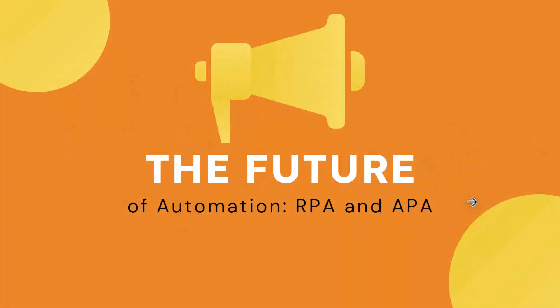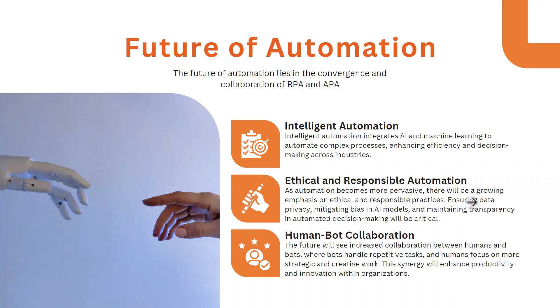Now talking about the future of automation with respect to RPA and APA — the future is obviously RPA going hand in hand with APA. When I say APA, it's about infusing AI and ML into your RPA logic or solutions, so we can do intelligent automation. No more only traditional RPA projects — all will be intelligent automation solutions where we add more flexibility and decision making power to our RPA bots.